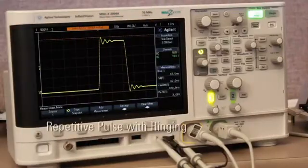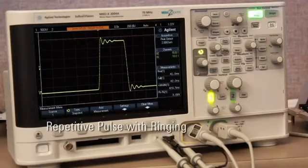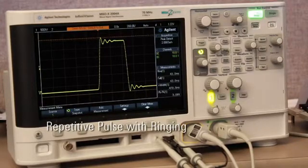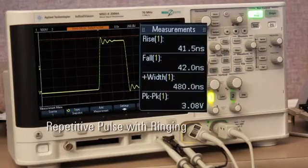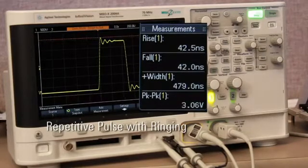The repetitive pulse with ringing training signal is used to teach students how to quickly perform various parametric measurements such as rise time, fall time, pulse width, and volts peak-to-peak using the scope's automatic measurements.